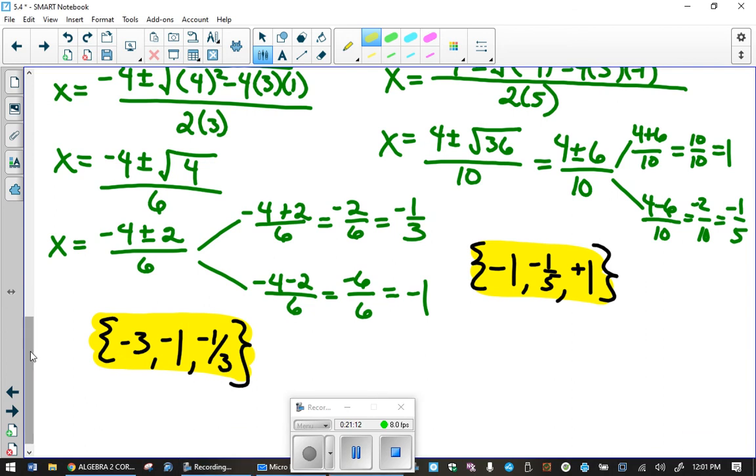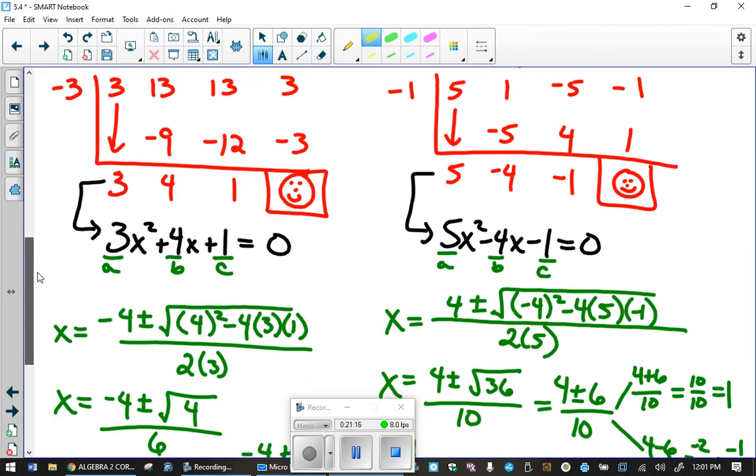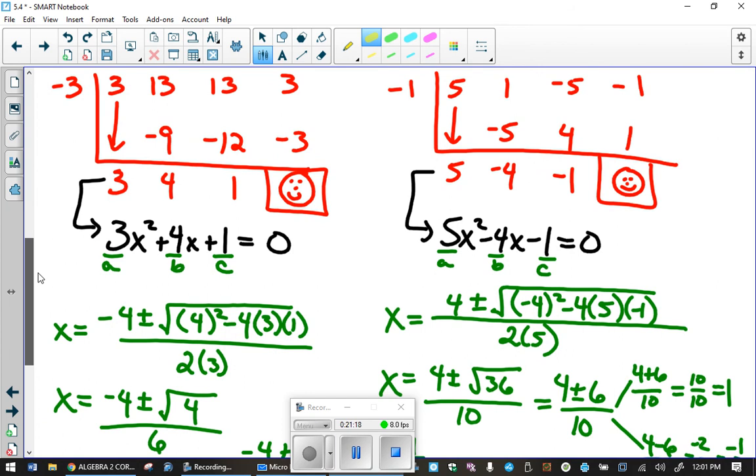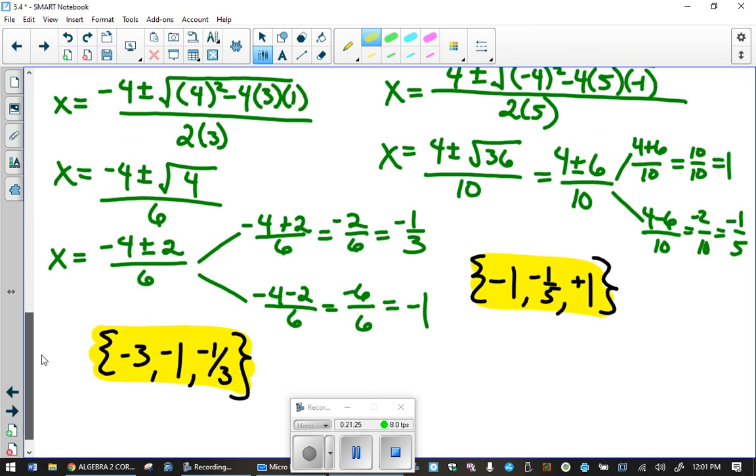And we're back. And for the last problem, after doing the synthetic division, our leftover function becomes 5x squared minus 4x minus 1. And solving that with quadratic formula leads to two additional solutions. And the complete solution set is listed there.